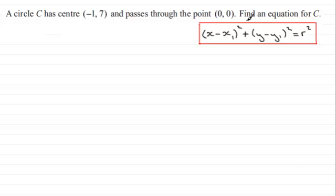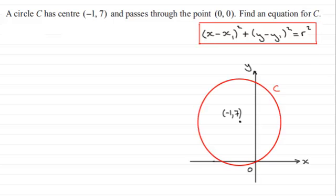When you've got a question like this, good idea just to draw a sketch for it. If we were to draw our circle here with the center at coordinates (-1, 7), it passes through the origin here.